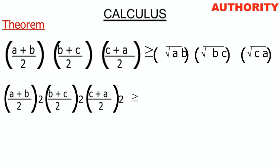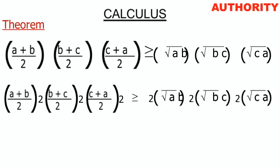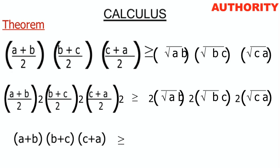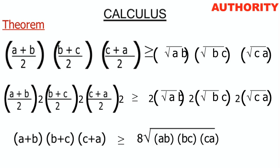Multiplying the first, second, and third terms each by 2, and also multiplying their respective geometric means by 2, we successfully remove the denominators. We now have (a+b)(b+c)(c+a) ≥ 2×2×2 times the geometric means. Two times two is four, four times two is eight — so we get 8.